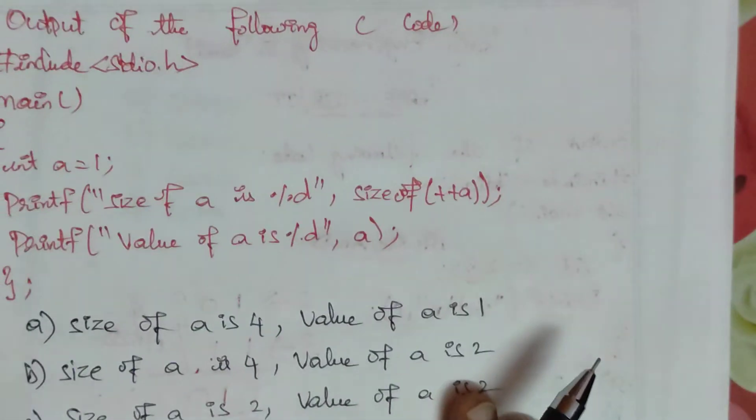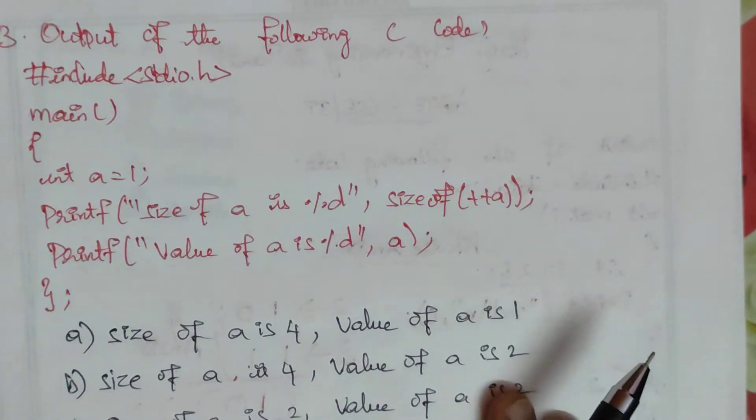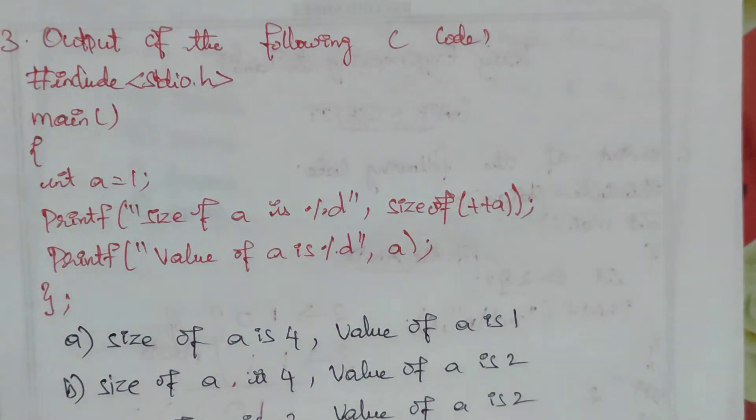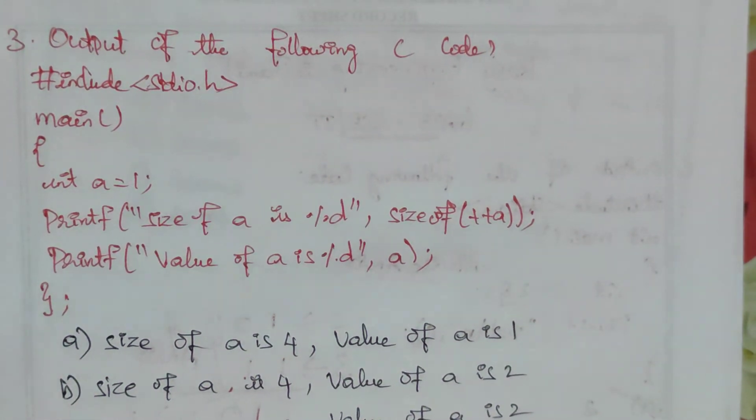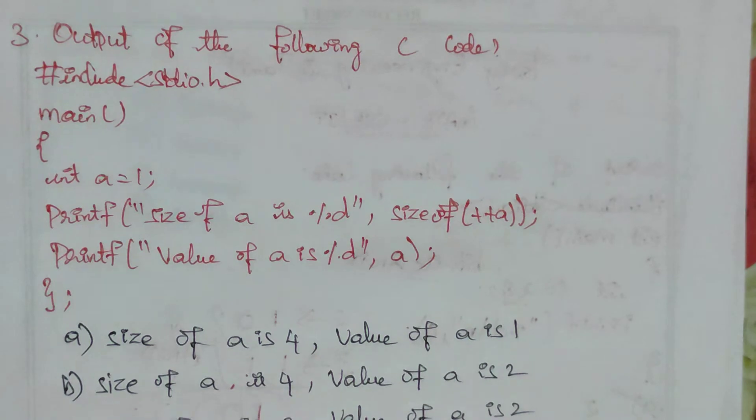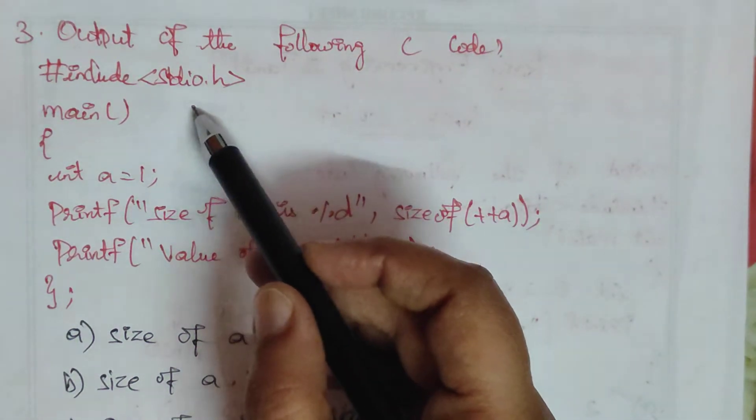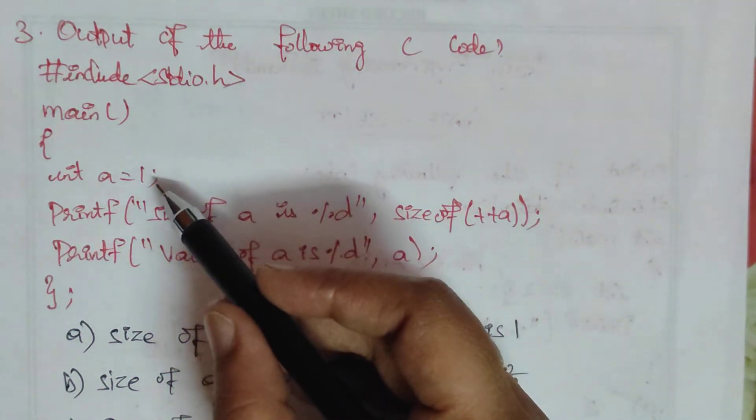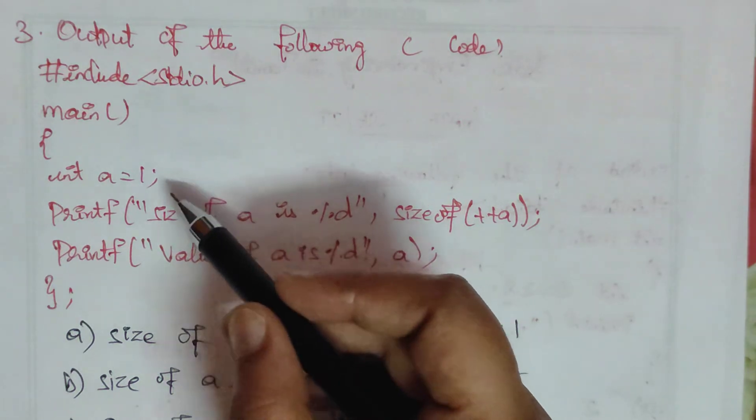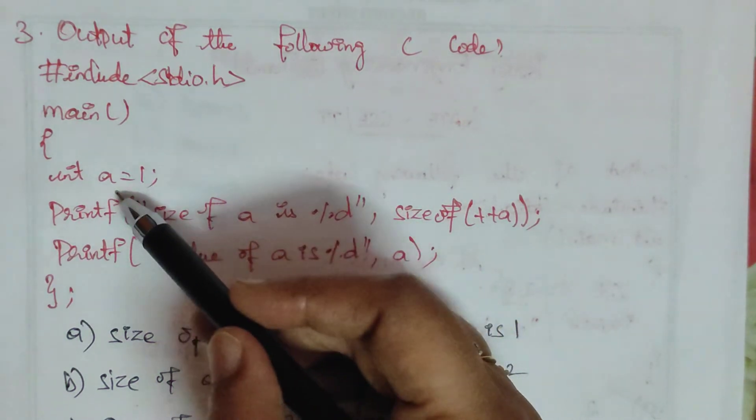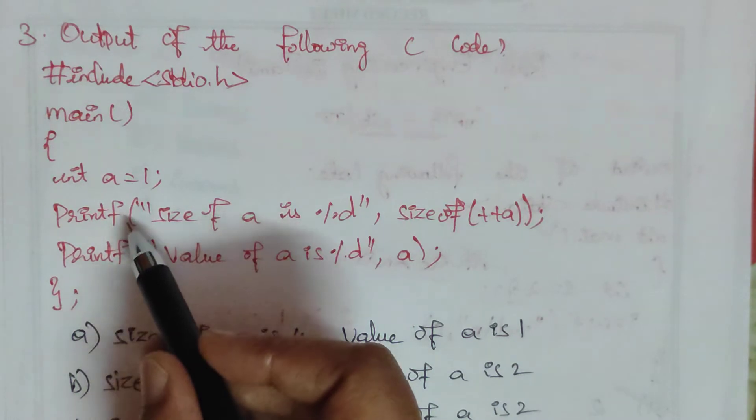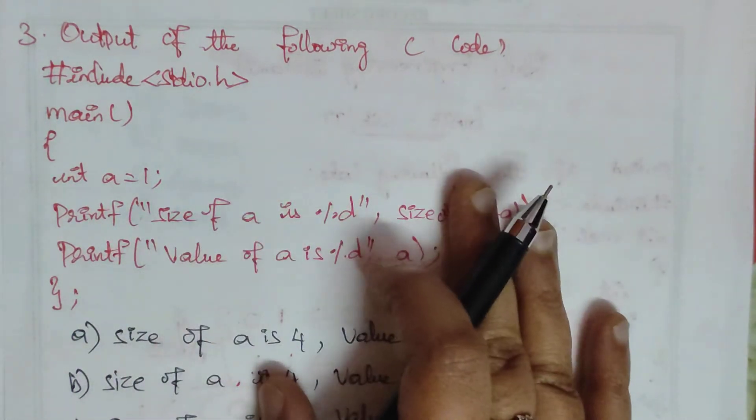The next question is output of the code. We are having a code with the same main function. A variable, integer a, is assigned value 1. We have two print statements.